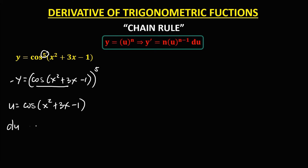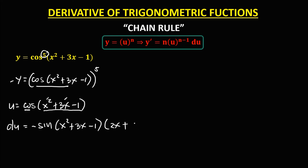From this given, u equals cosine (x squared plus 3x minus 1). Then for the derivative of u: since the derivative of cosine is negative sine, we have negative sine (x squared plus 3x minus 1), times the derivative of (x squared plus 3x minus 1). The derivative of x squared is 2x, plus the derivative of 3x, that's 3, and the derivative of negative 1 is 0, so we have 2x plus 3. Therefore, du equals negative (2x plus 3)·sine (x squared plus 3x minus 1).